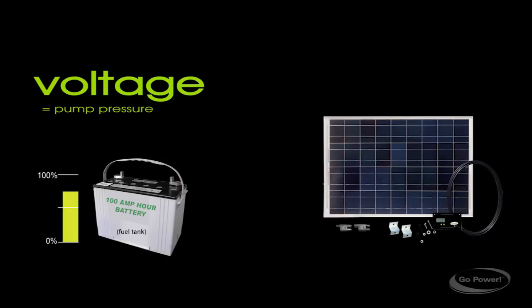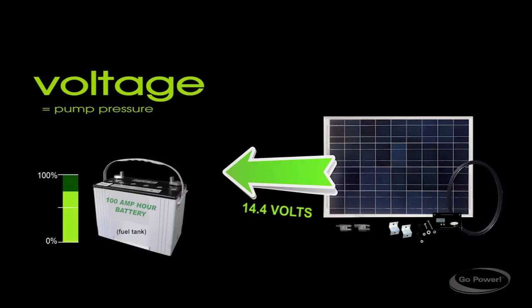With every GoPower solar kit, they are all designed to put out 100% charge, 14.4 volts, to bring your batteries up to 100% charge every time they charge them. So every time it's light out, you're going to get batteries topped up right to 100%.